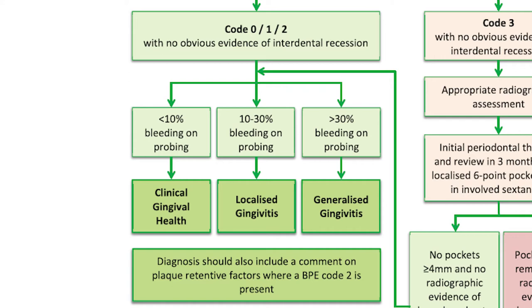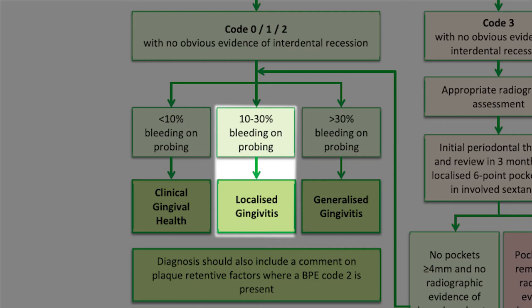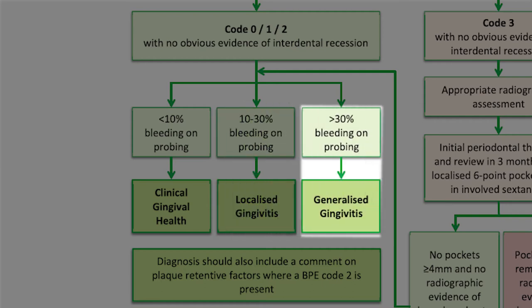Let's start by discussing a patient who scores 0s and 1s on their BPE. If while you were carrying out your BPE you saw less than 10% bleeding on probing, this indicates clinical gingival health. Between 10 and 30% bleeding on probing gives a diagnosis of localised gingivitis, and more than 30% bleeding on probing would be a generalised gingivitis.